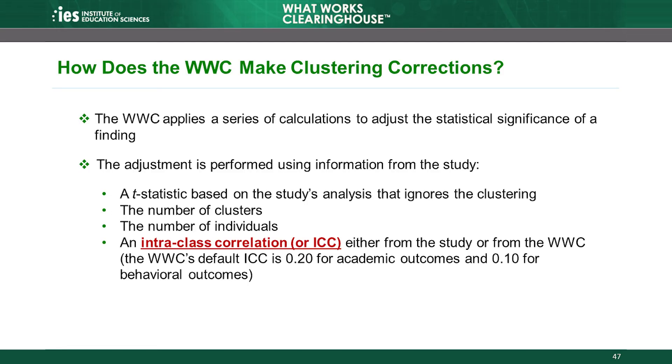The WWC applies a series of calculations to adjust a study's reported level of statistical significance to account for clustering. As discussed in the reporting module — Module 7 — reviewers use the Study Review Guide to make the necessary adjustments to the statistical significance of findings, including this cluster correction. The Study Review Guide performs this adjustment using four items: a t-statistic based on the study's analysis that ignores the clustering, the number of clusters, the number of individuals, and an intraclass correlation (ICC). The WWC uses either the ICC reported in the study or the WWC's default ICC, which is 0.2 for academic outcomes and 0.1 for behavioral outcomes. For more detailed information on how the WWC calculates the adjustment, see Appendix F of the Procedures Handbook.